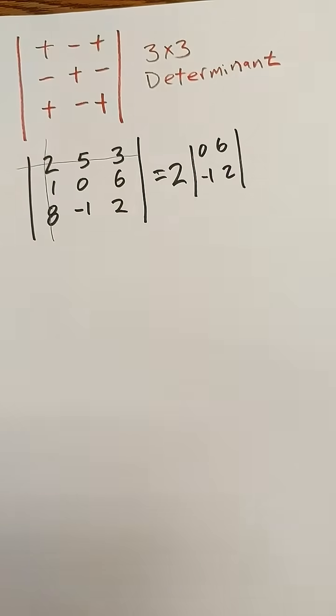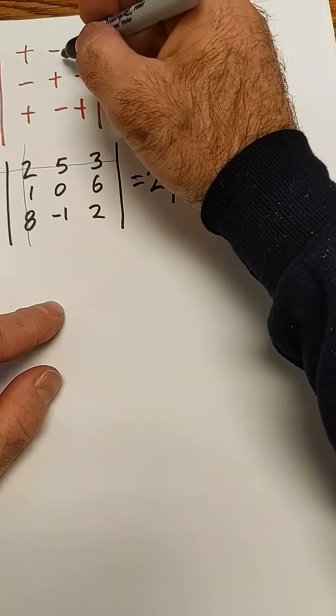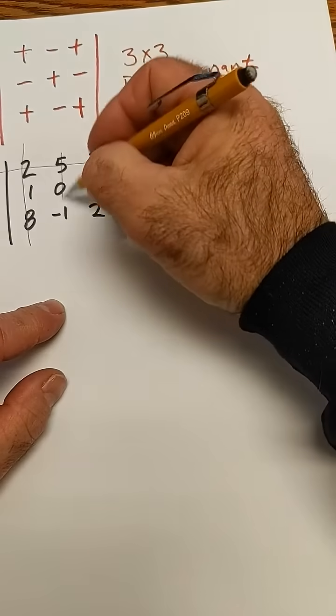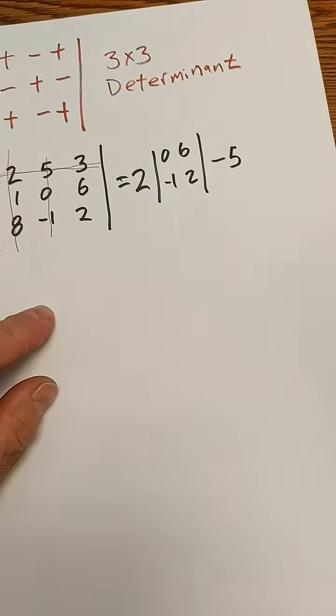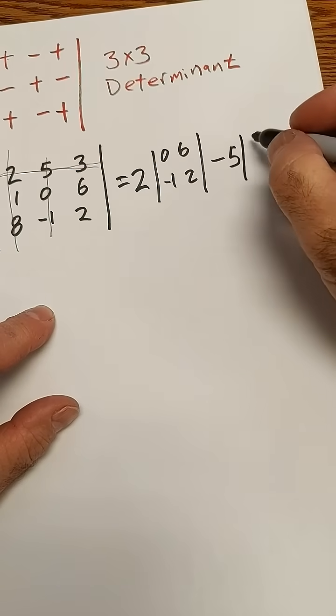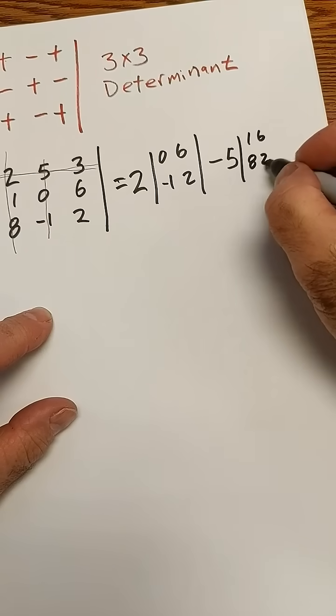I'm going to solve that like I did in the other ones. The next number is going to be negative because of that negative there, so it's going to be a negative 5. I cross out its row and column, and I'm left with 1, 6, 8, 2.